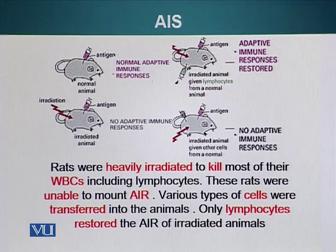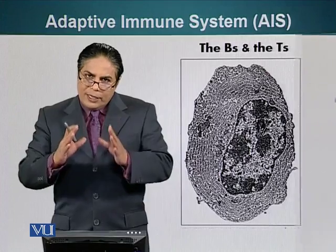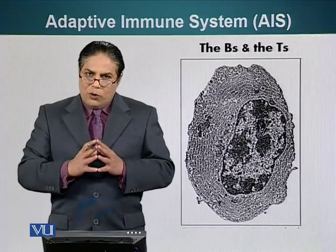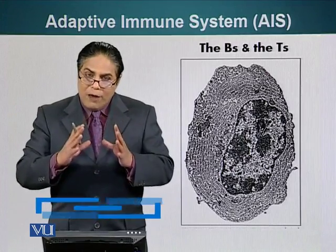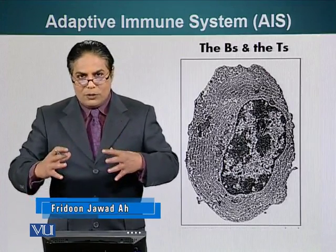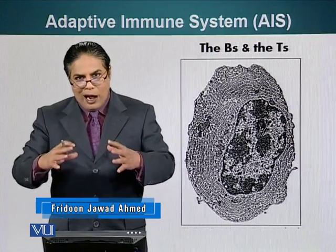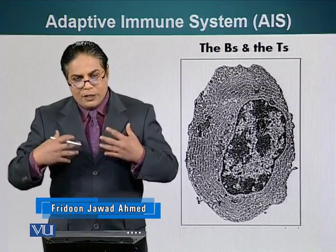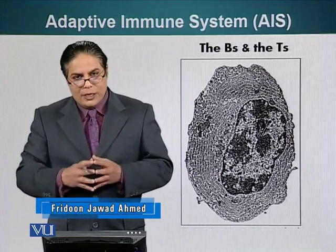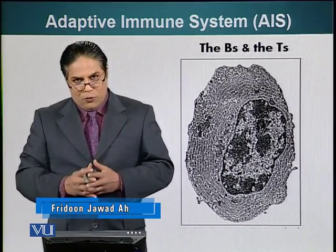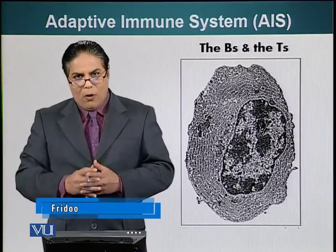So these adaptive immune cells are responsible for mounting adaptive immune responses, and these adaptive immune responses also have to be very regulated, because turning our immune army against our own cells, as I mentioned, can be disastrous for the organism.